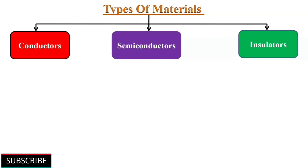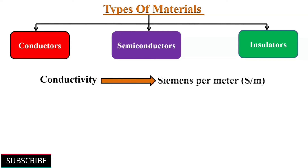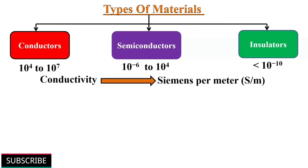Electrical conductivity is measured in Siemens per meter. The conductivity of conductors is in between 10 to the power of 4 to 10 to the power of 7 Siemens per meter. Semiconductors' conductivity is in between 10 to the power of minus 6 to 10 to the power of 4 Siemens per meter. And insulators' conductivity is less than 10 to the power of minus 10 Siemens per meter.